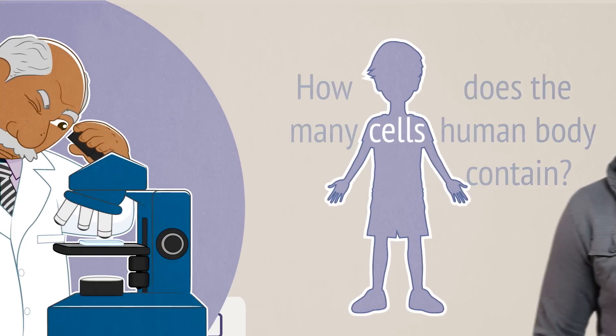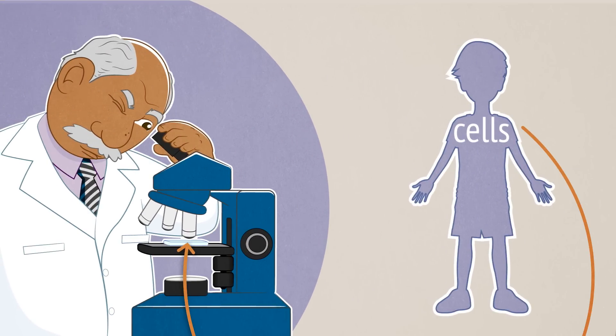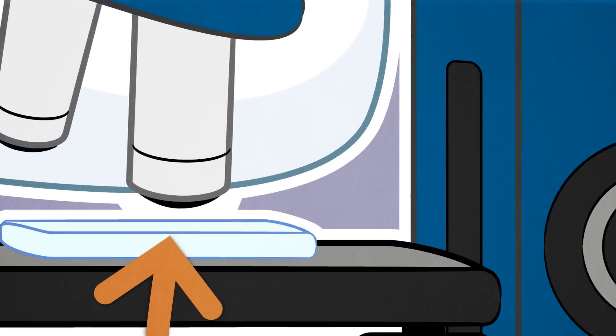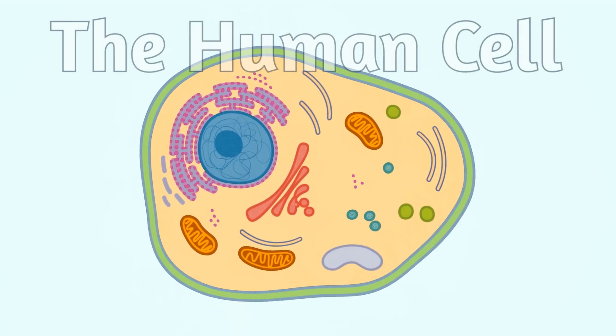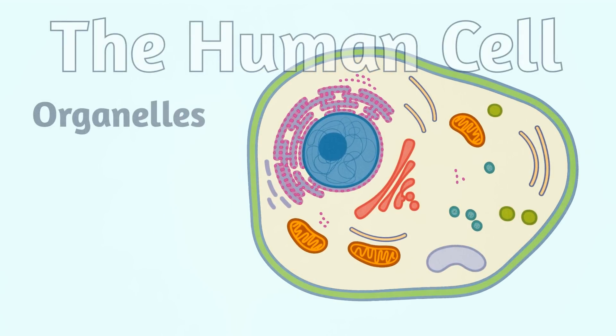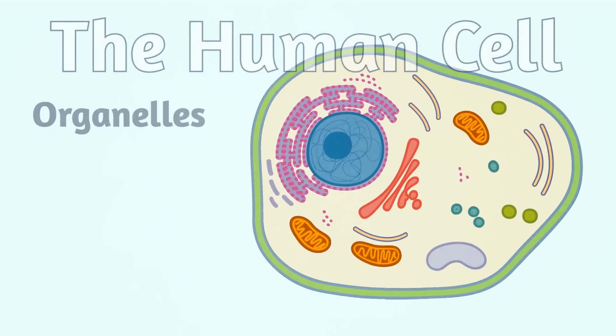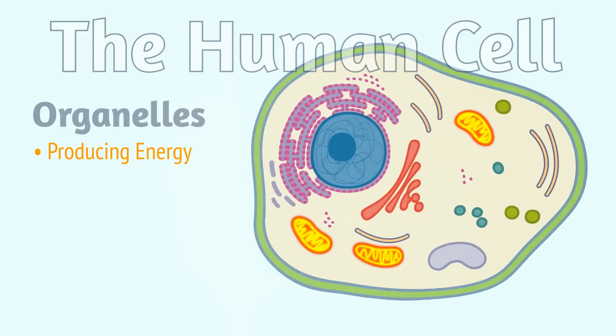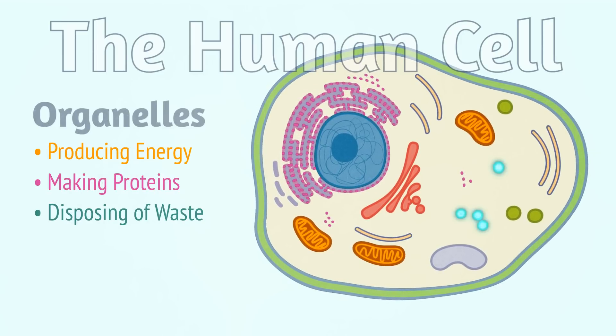Scientists look inside these cells to see the awesome machinery that makes life possible. Cells contain many tiny structures called organelles, performing functions essential to life: producing energy, making proteins, and disposing of waste.